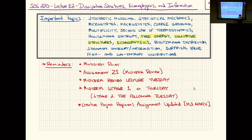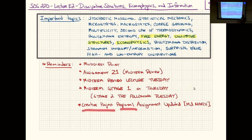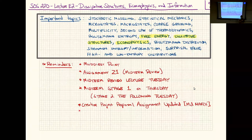After the availability window for stage two closes, I'll release the scores and the answers. Your total midterm score will be 80% stage one plus 20% stage two. Also, due sometime mid-March is the creative project proposal — just a short one- to two-page proposal of what you're planning to do for the creative project. I've added details including a rubric on Canvas, so take a look at that assignment.